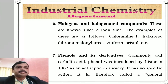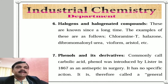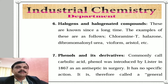Number six, halogens and halogenated compounds. These have been known since a long time. Examples include chloramine-T, halazone, dibromomeloid urea, vioform, eristole, etc., which are used as antiseptics.